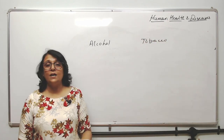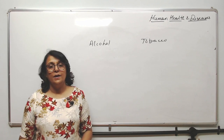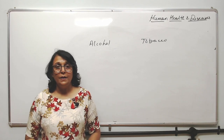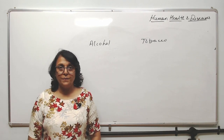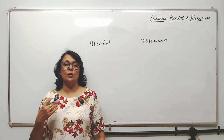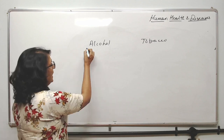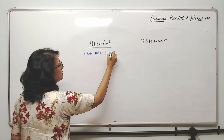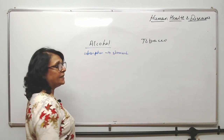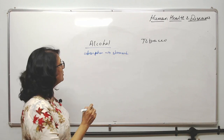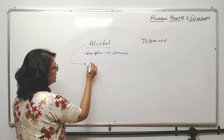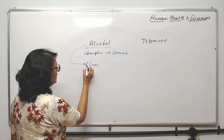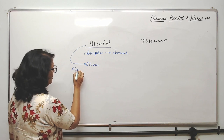Alcohol and tobacco are two things which are affecting our body. People who take alcohol suffer from various problems. When alcohol goes into our alimentary canal, its absorption takes place in the stomach itself — it gets absorbed from the stomach, and then reaches the liver.